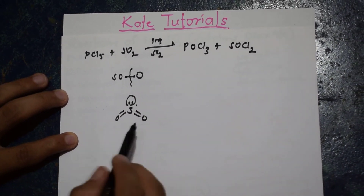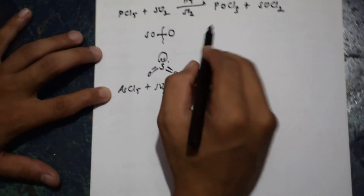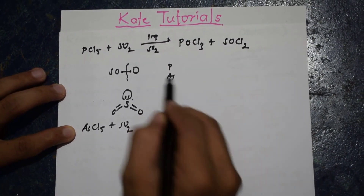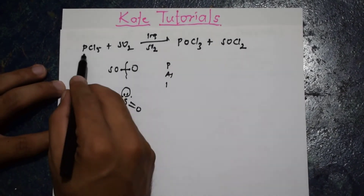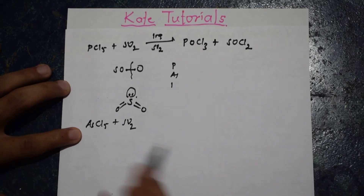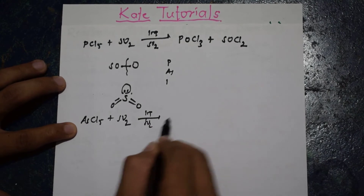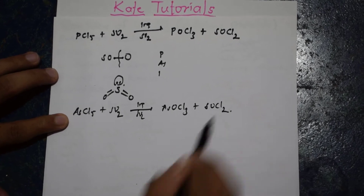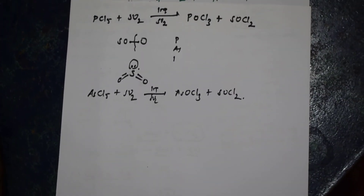Similarly, consider AsCl₅ plus SO₂. Arsenic comes under the same group as phosphorus. AsCl₅ plus SO₂ in liquid sulfur dioxide gives ASOCl₃ plus SOCl₂. That is another example of solvolysis of sulfur dioxide.